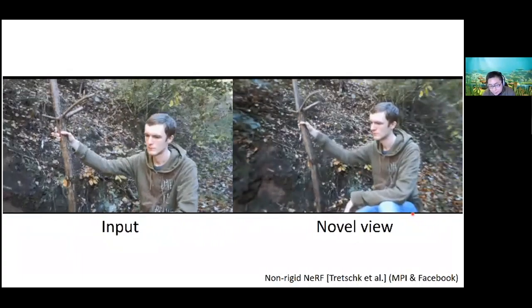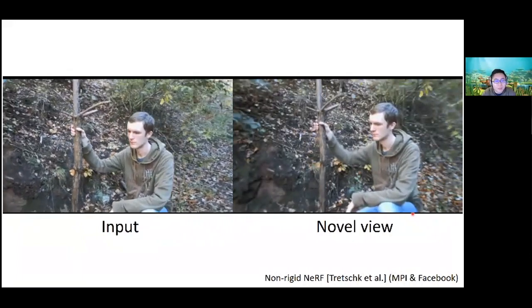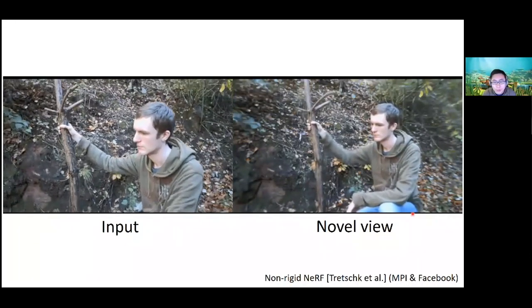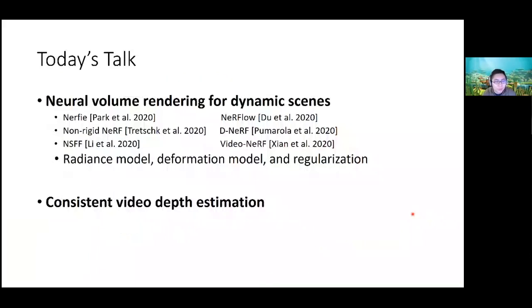There's also a paper from MPI and Facebook where, given an input video on the left, you can see novel view rendering on the right — a person shaking a tree, smoothly interpolated between camera viewpoints. There are already many papers in this area. In this talk, I'll discuss neural scene rendering — specifically the extension of radiance fields from static to dynamic scenes. There are at least six papers here, with probably many more coming. Rather than covering each individually, I'll provide a unifying perspective to help understand the design choices that arise across these papers.